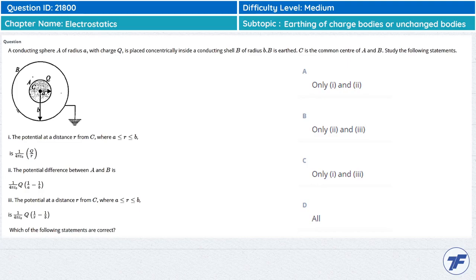The value is 1 upon 4 pi epsilon 0 q by R. The potential difference between A and B is 1 upon 4 pi epsilon 0 q, 1 by A minus 1 by B.